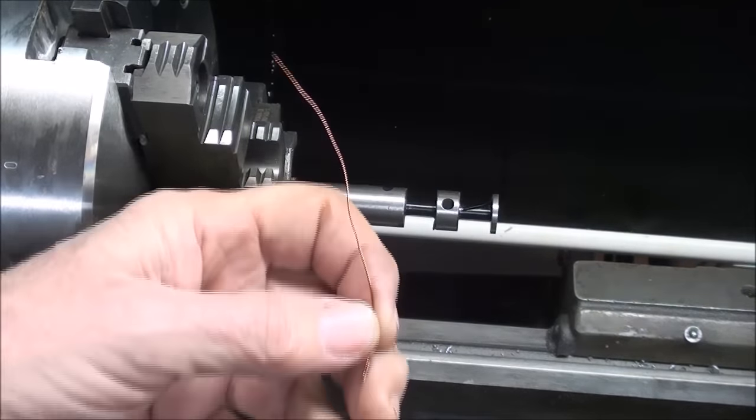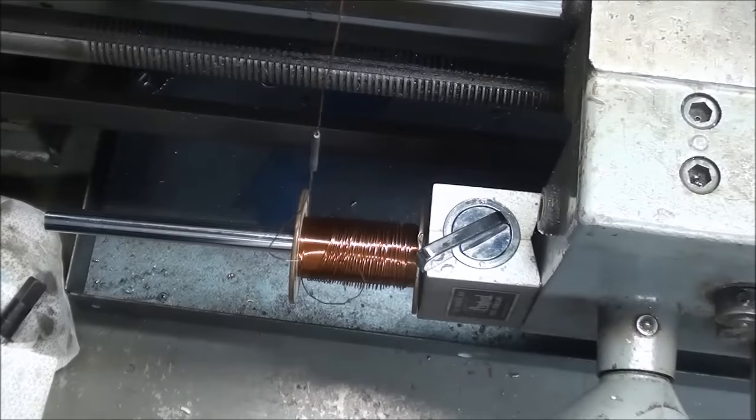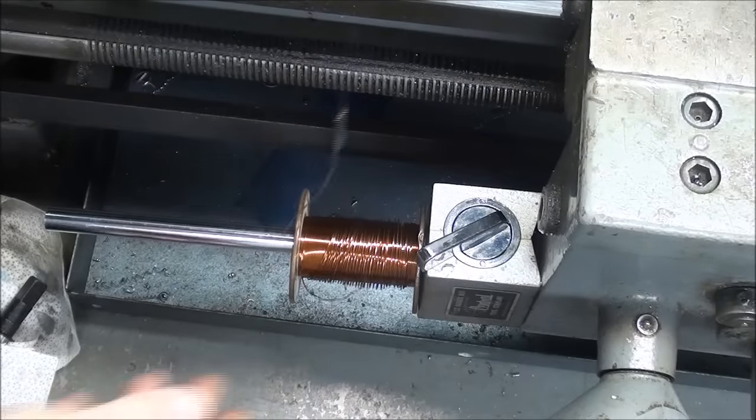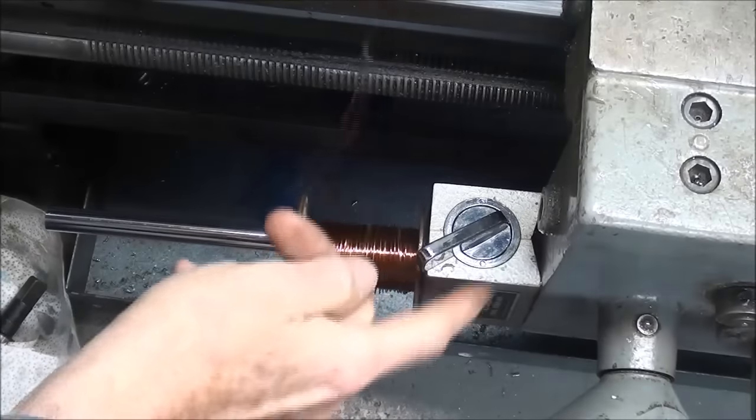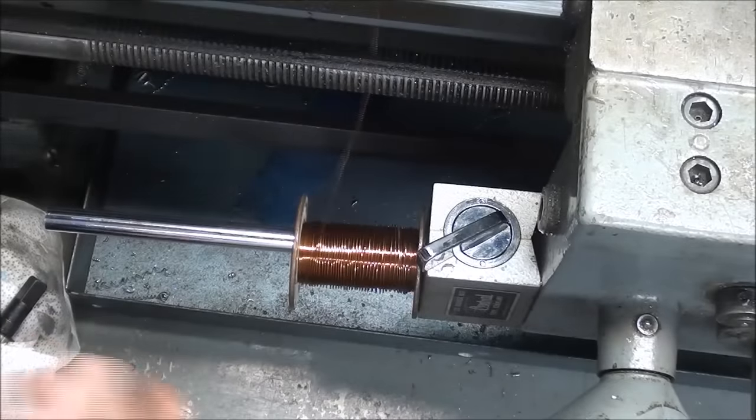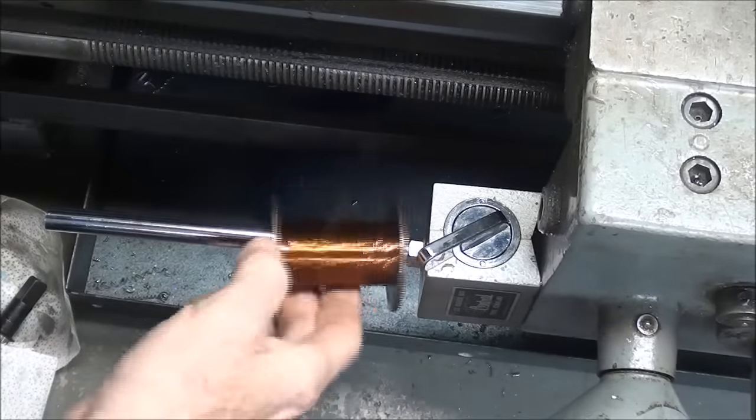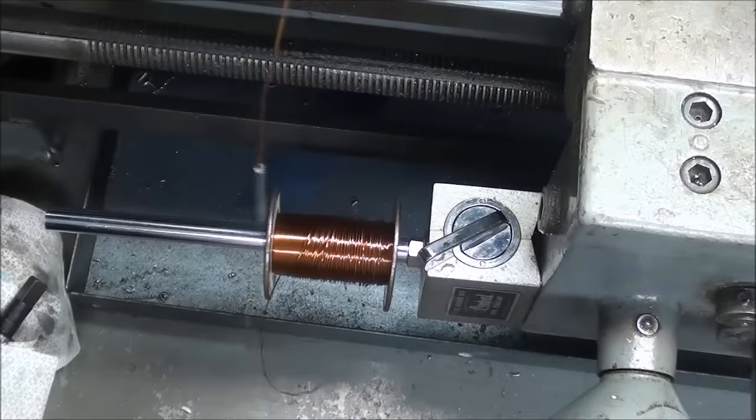I have here at the Colchester lathe a coil of magnet wire, and I've got a magnetic indicator holder right here just to allow the coil to spin as I wind the armature.